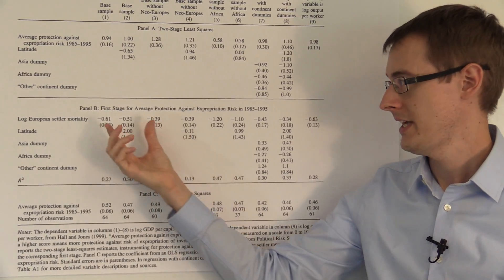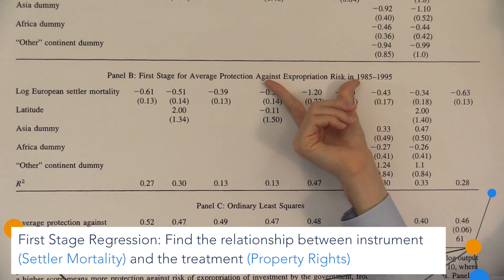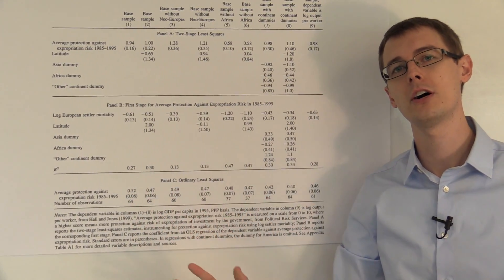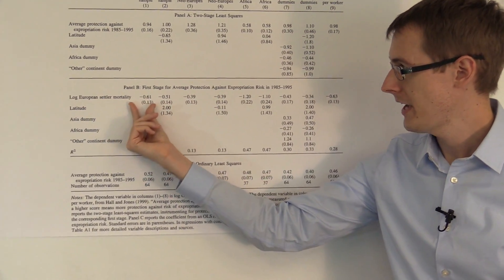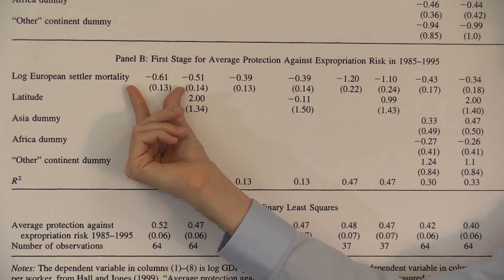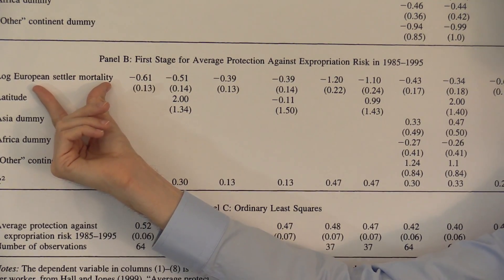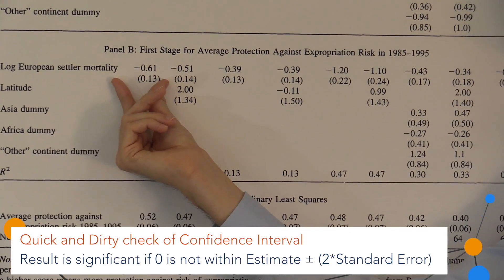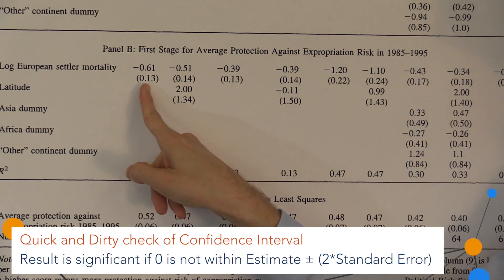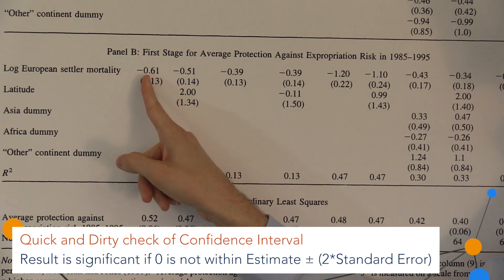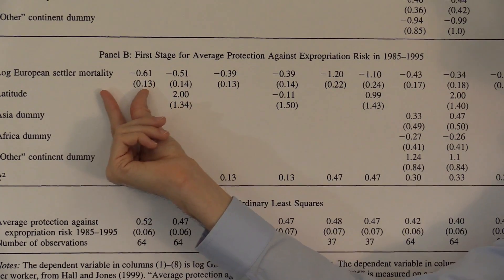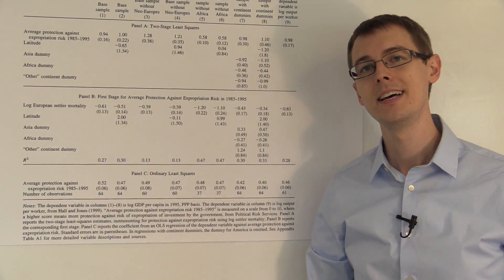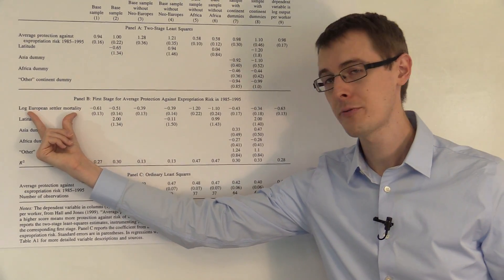So they've included it here for comparison to the actual causal effects shown in panel A. In panel B, they show the first stage for average protection against expropriation risk — that's our measure of property rights, our treatment variable. These are the first stage regressions we talked about in earlier modules. Here in the first column, they're showing the correlation between the instrument, log European settler mortality, and the treatment variable, average protection against expropriation risk. We see a negative coefficient of minus 0.61 — the number in parentheses is the standard error. We could use that to construct a confidence interval and find that this is a statistically significant estimate — it is not zero.